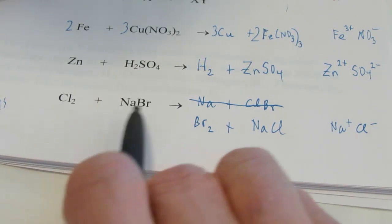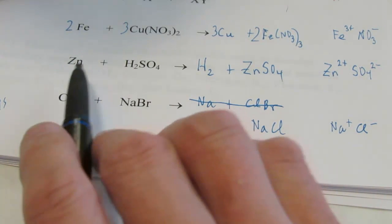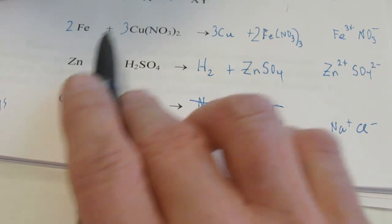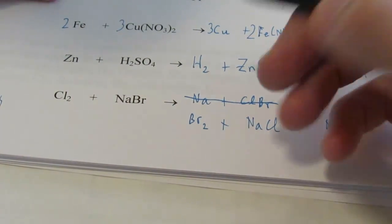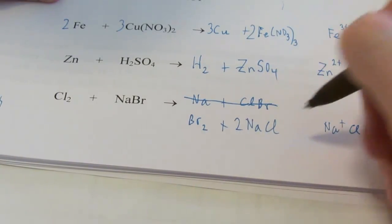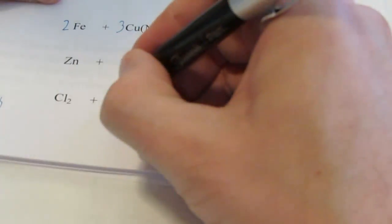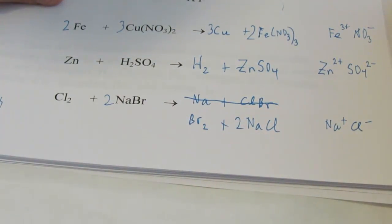So be careful on these. This element here does not always switch with the first element in the compound. If it's a nonmetal, it's going to switch with the nonmetal. If it's a metal, it's going to switch with the metal or hydrogen, which we all know is a nonmetal, but behaves a lot like a metal. This one's not balanced, so we'll fix that really quickly. We'll put a 2 here and a 2 there, and we're done.